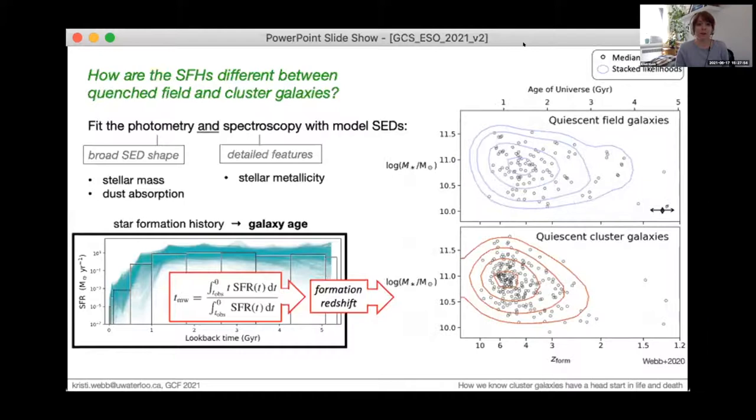After fitting all of the quiescent galaxies in GoGreen, we can look at the distribution of formation redshifts as a function of stellar mass and separated by environment. This includes around 300 galaxies, two-thirds of which are cluster members, and the open circles indicate the median of each individual quenched galaxy posterior, while the contours trace the combined likelihood space. And I've just drawn some arrows here to indicate the typical standard deviation of the individual posteriors.